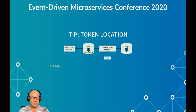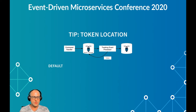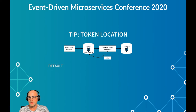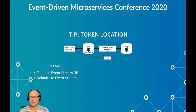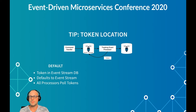Here's the first tip, about token store location. Normally when you create a tracking event processor in Axon, the Spring Boot configuration will create the token store in the same database as the event store. This isn't necessarily a problem — if you're writing a small application, everything will probably be in the same database anyway. But there's a drawback: all processors constantly poll the token entry table, which puts quite a bit of load on the database containing the event stream.